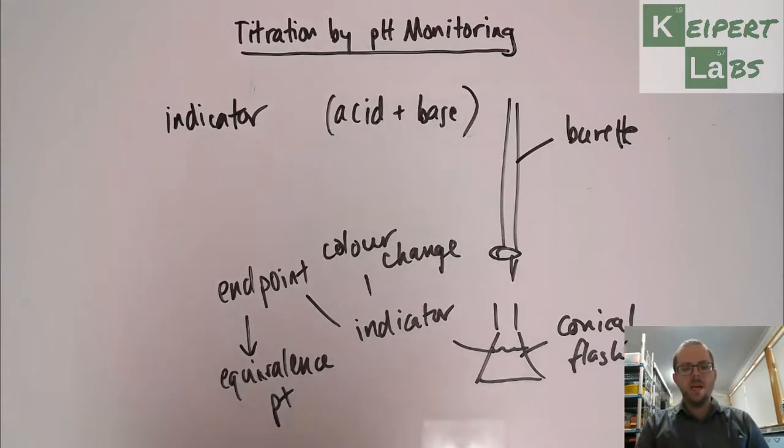The colour change in the indicator, we want to occur as close to this point as possible, because that tells us when we've reached it. We look for the colour change in that one drop and then we switch off the burette and that tells us when we're in the right spot.